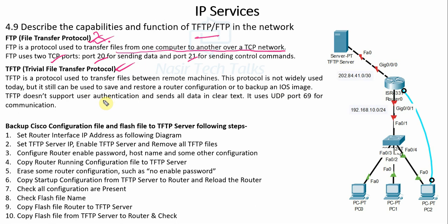TFTP protocol is used for router configuration file and IOS file backup and restore. TFTP does not support user authentication, and it sends all data in clear text — there is no encryption. It uses UDP port 69.